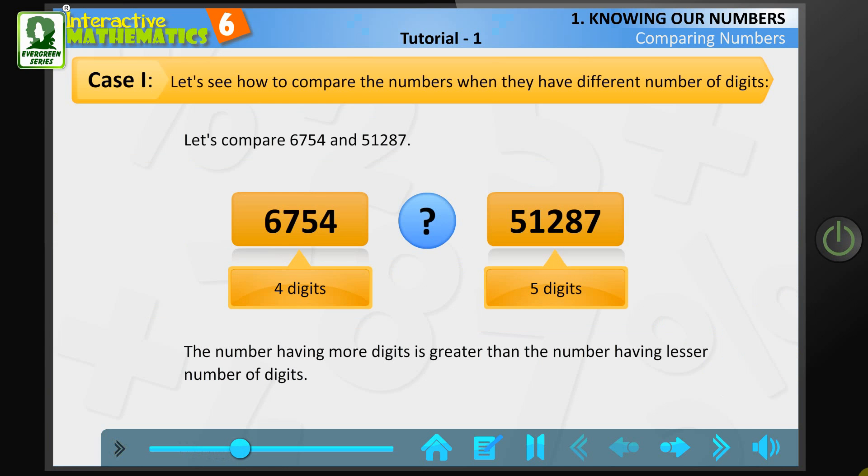The number having more digits is greater than the number having lesser number of digits. Therefore, 51,287 is greater than 6,754.